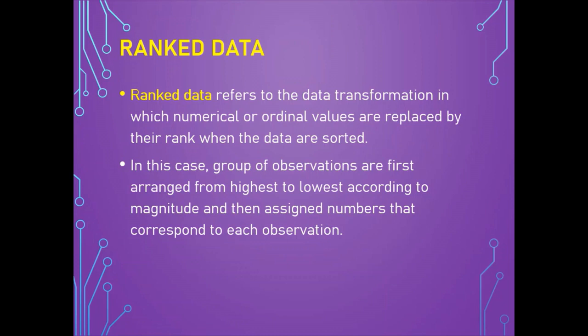In some situations, we have a group of observations that are first arranged from highest to lowest according to magnitude and then assigned numbers corresponding to each observation's place in the sequence — this is known as rank data. In statistics, ranking refers to the data transformation in which numerical or ordinal values are replaced by their rank when the data are sorted. For example, consider all possible causes of death in India — if causes are ordered from the greatest number of deaths to the smallest and then assigned consecutive integers, the data are said to have been ranked.